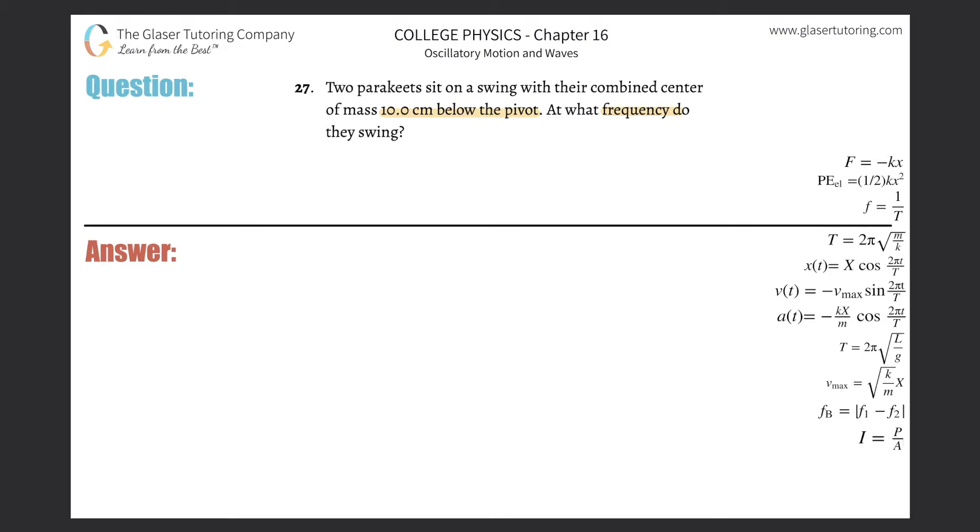If they're swinging, what type of motion are they in? They're in motion of a pendulum, right? So I'm going to use the pendulum formula. The period of oscillation for a pendulum is equal to 2π multiplied by the square root of the length of that pendulum's arm divided by g.